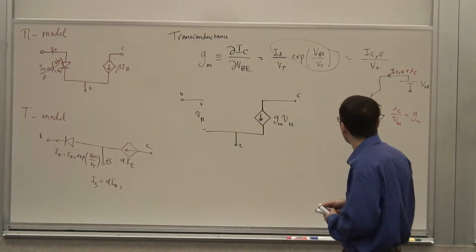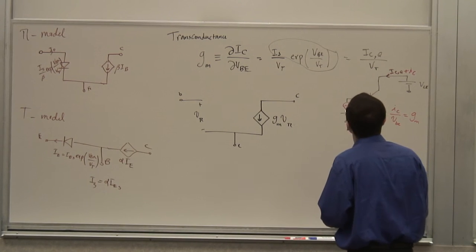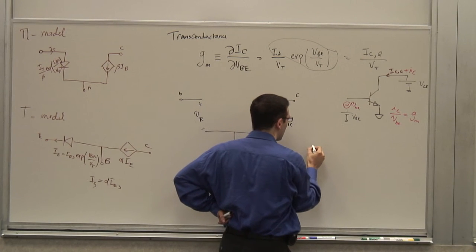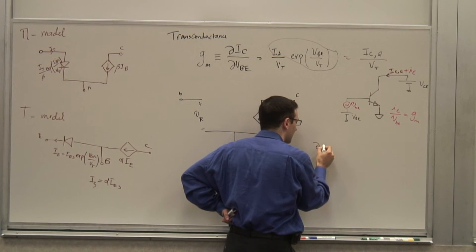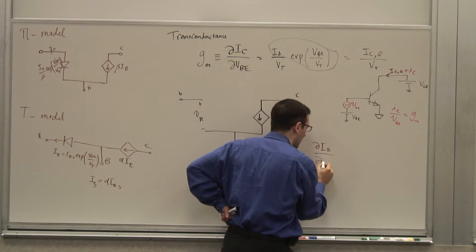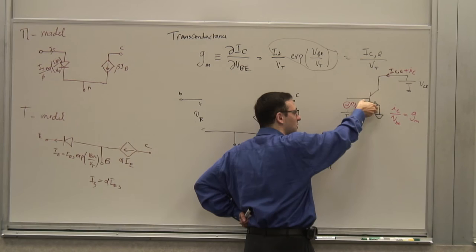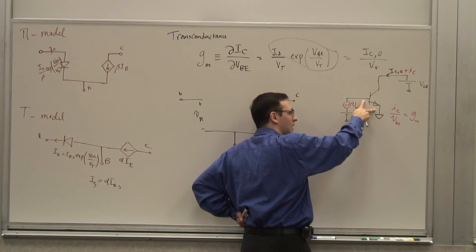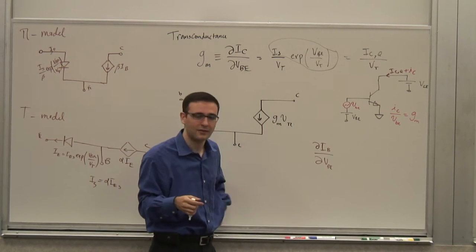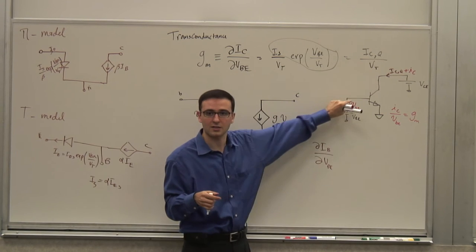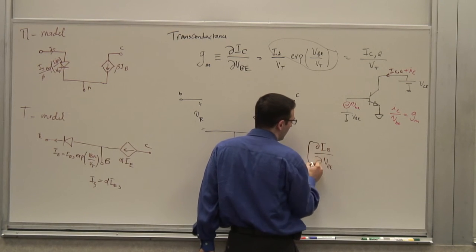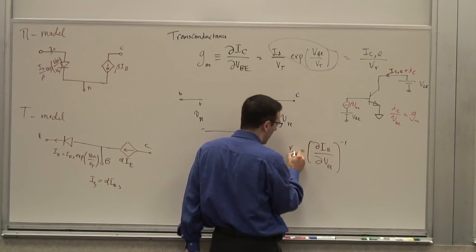I can calculate it by the same method. Let's call it whatever it is — it's the conductance between those two terminals, which is the derivative dIB/dVBE. We define the reciprocal as Rpi. What is dIB/dVBE? Well, in the forward active region, IC = beta times IB, so I can rewrite this as (1/beta) times dIC/dVBE.